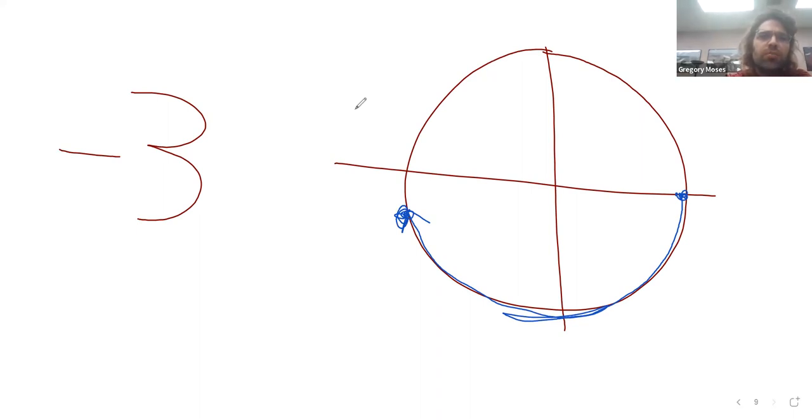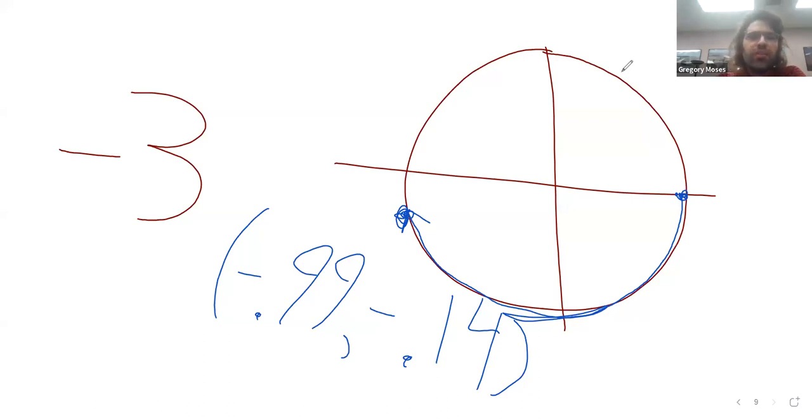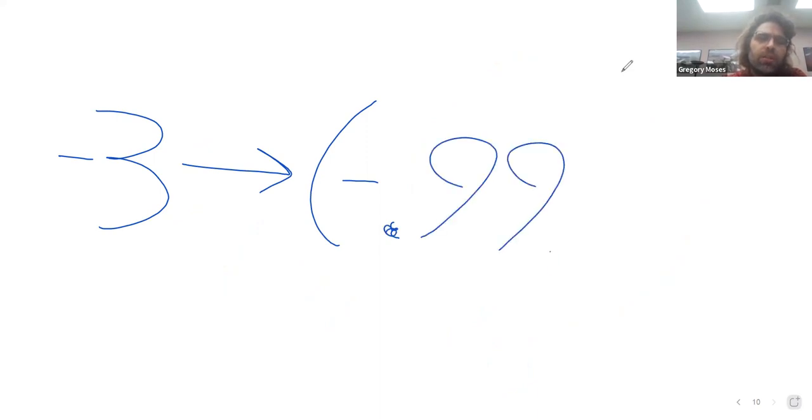Sorry, didn't mean to do that. And if we go with three units clockwise we end up at this point. Negative 0.99, negative 0.14. So this function sends negative three to this.